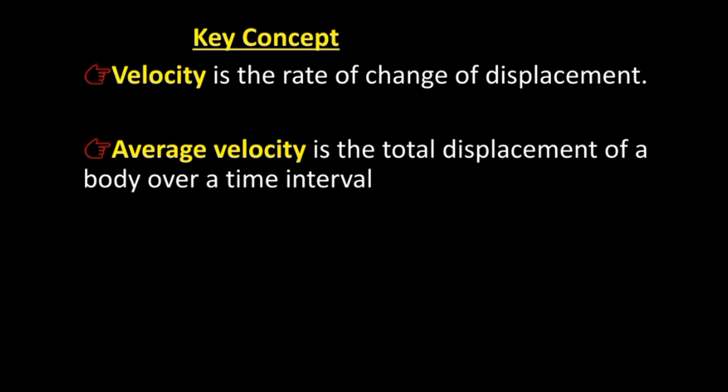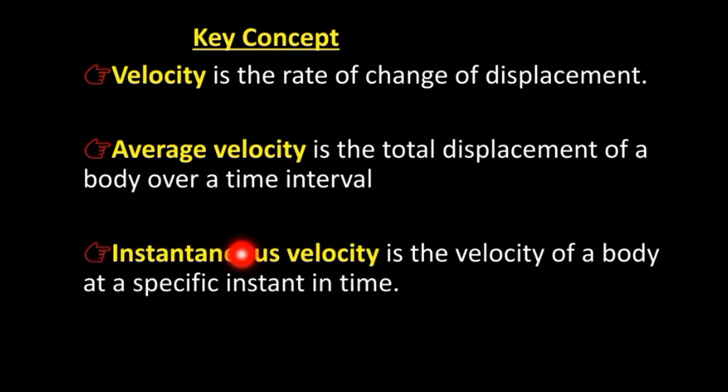Average velocity is the total displacement of a body over a time interval. Instantaneous velocity is the velocity of a body at a specific instant in time, found by letting the time interval approach zero.